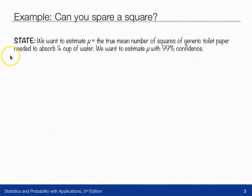So there's four parts to this problem. First thing we need to do is state what we want to do. We want to estimate mu, the true mean number of squares of generic toilet paper needed to absorb one-fourth of a cup of water. We want to estimate mu with 99% confidence.